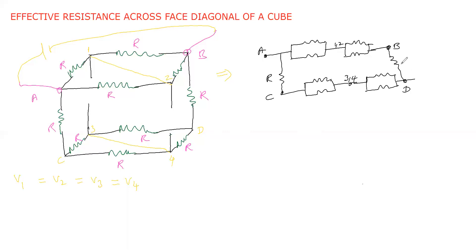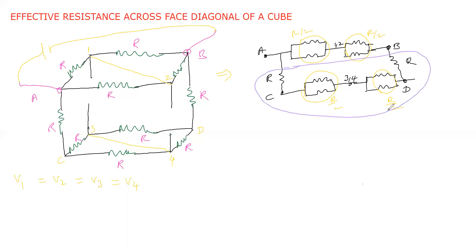The two resistors in parallel between a and node (1,2) give r/2. The one resistor between node (1,2) and c is r. The two resistors in parallel between c and node (3,4) give r/2. The two resistors in parallel between d and node (3,4) give r/2. The resistor between b and d is r. These series combinations — r/2, r, r/2 — sum to give a total of 3r for one branch, and the other branch has r/2 and r/2 in series giving r.